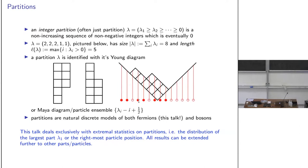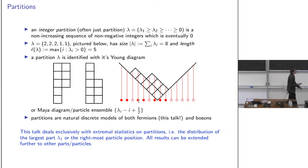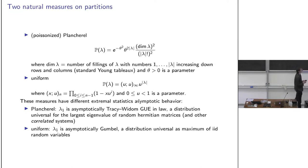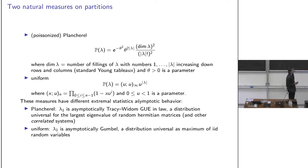Partitions have a size — the number of boxes, denoted |λ|. Two natural distributions exist on partitions. The first is the uniform measure: a weight u^|λ| for u a parameter less than one. On partitions of the same size this is simply the uniform measure. In the uniform case, λ₁ is asymptotically Gumbel.